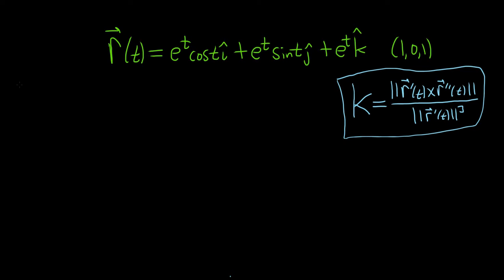Let's go ahead and work through this carefully. Before we start taking derivatives, let's rewrite this in component form. So r of t equals the angle bracket e to the t cosine t, e to the t sine t, and e to the t.